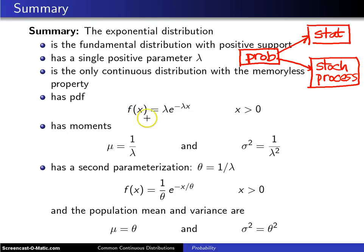The probability density function is f of x equals lambda e to the minus lambda x. The support is x greater than 0 and there are a lot of things in the real world that assume just positive values.